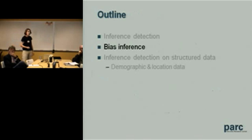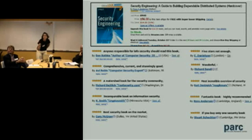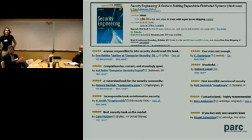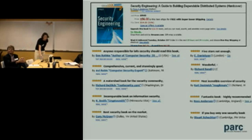Let's shift gears and talk about using this to detect bias. Starting with an example: this is a security book by Ross Anderson — a very good book — available on Amazon today. It has 27 customer reviews and is very highly rated, almost four and a half stars. The question is: beyond reading the content of these reviews, is there anything quick you can do to calibrate them? Just from reviewer names and author info, with no content, what can you say?